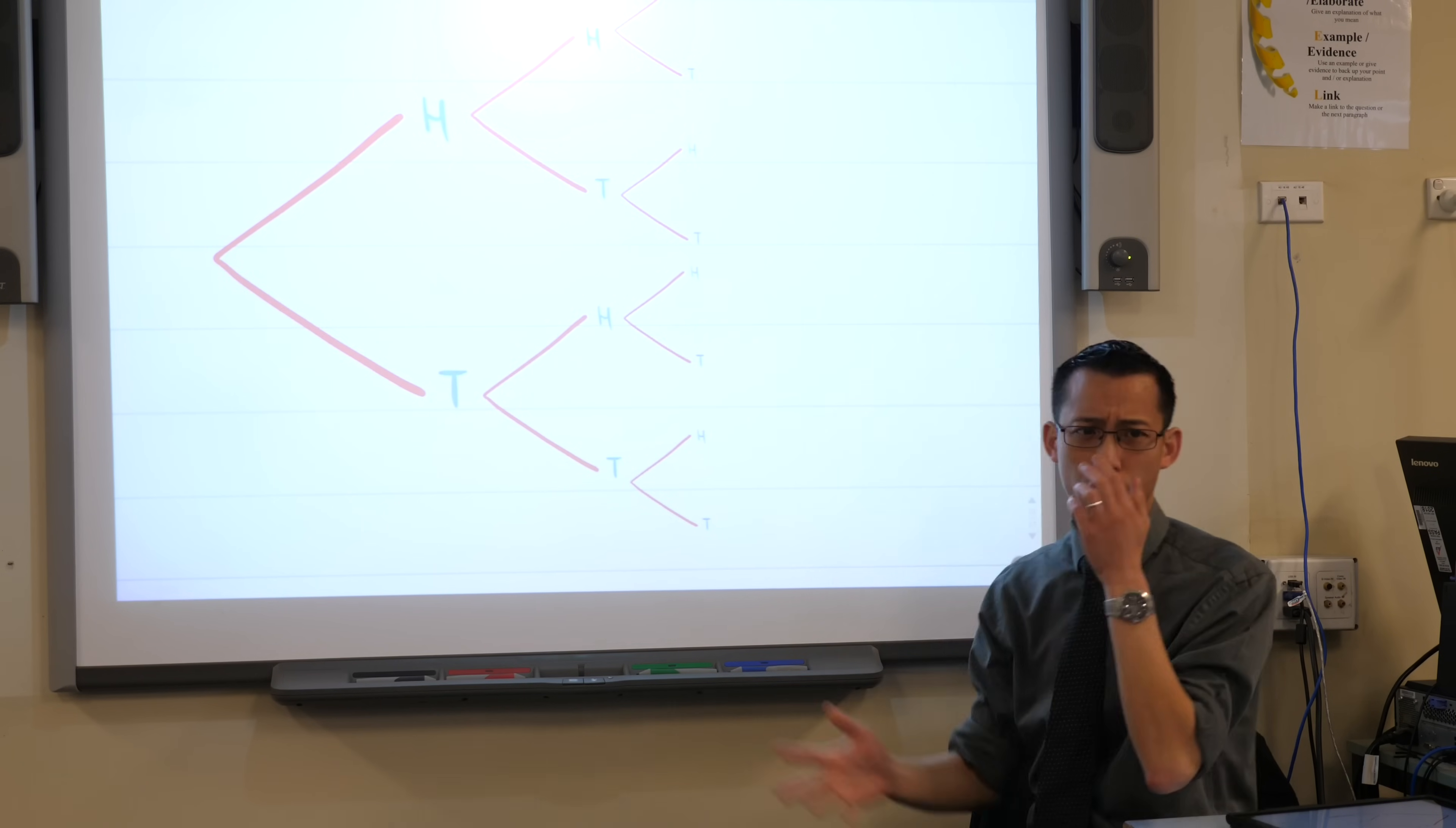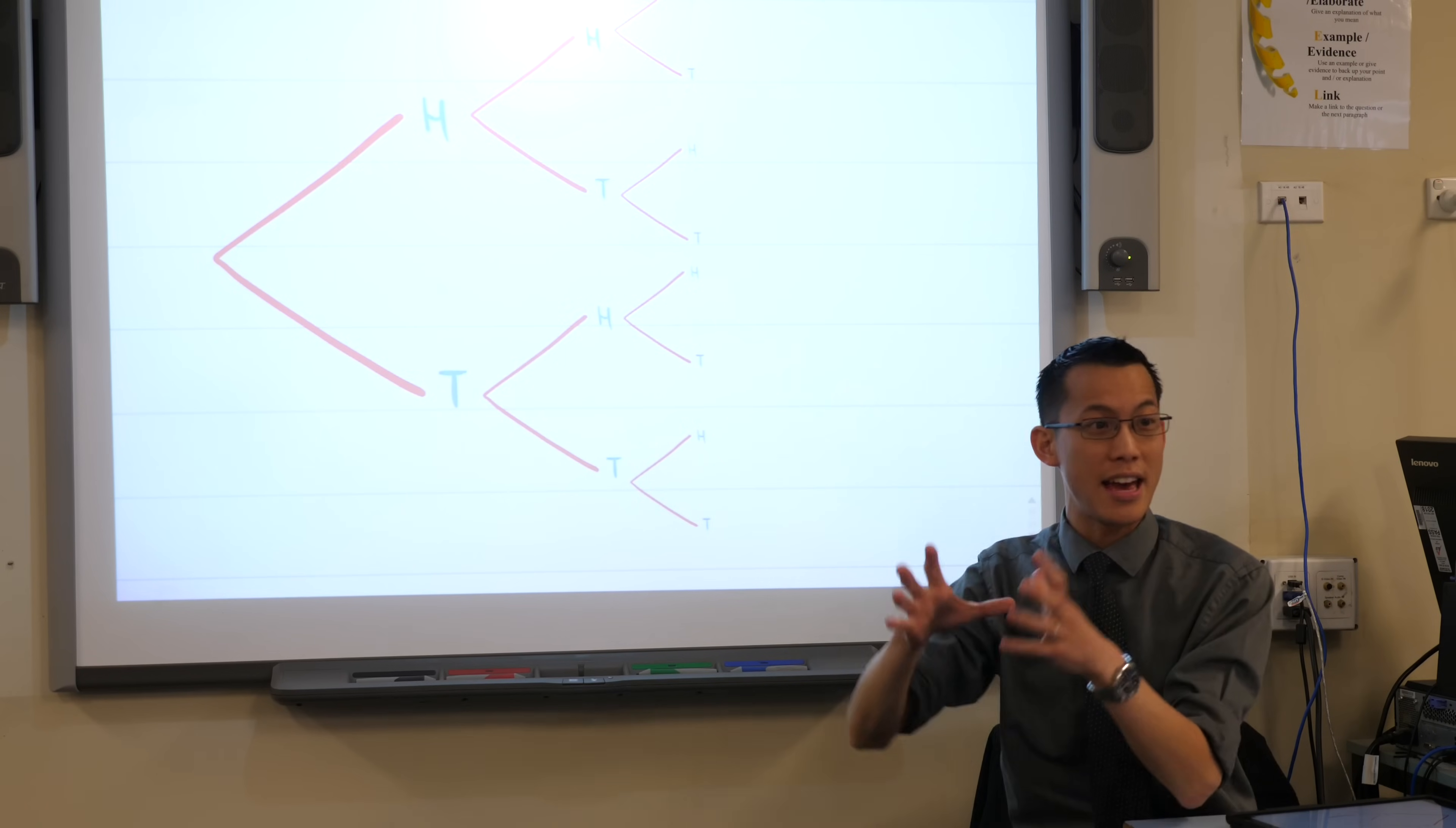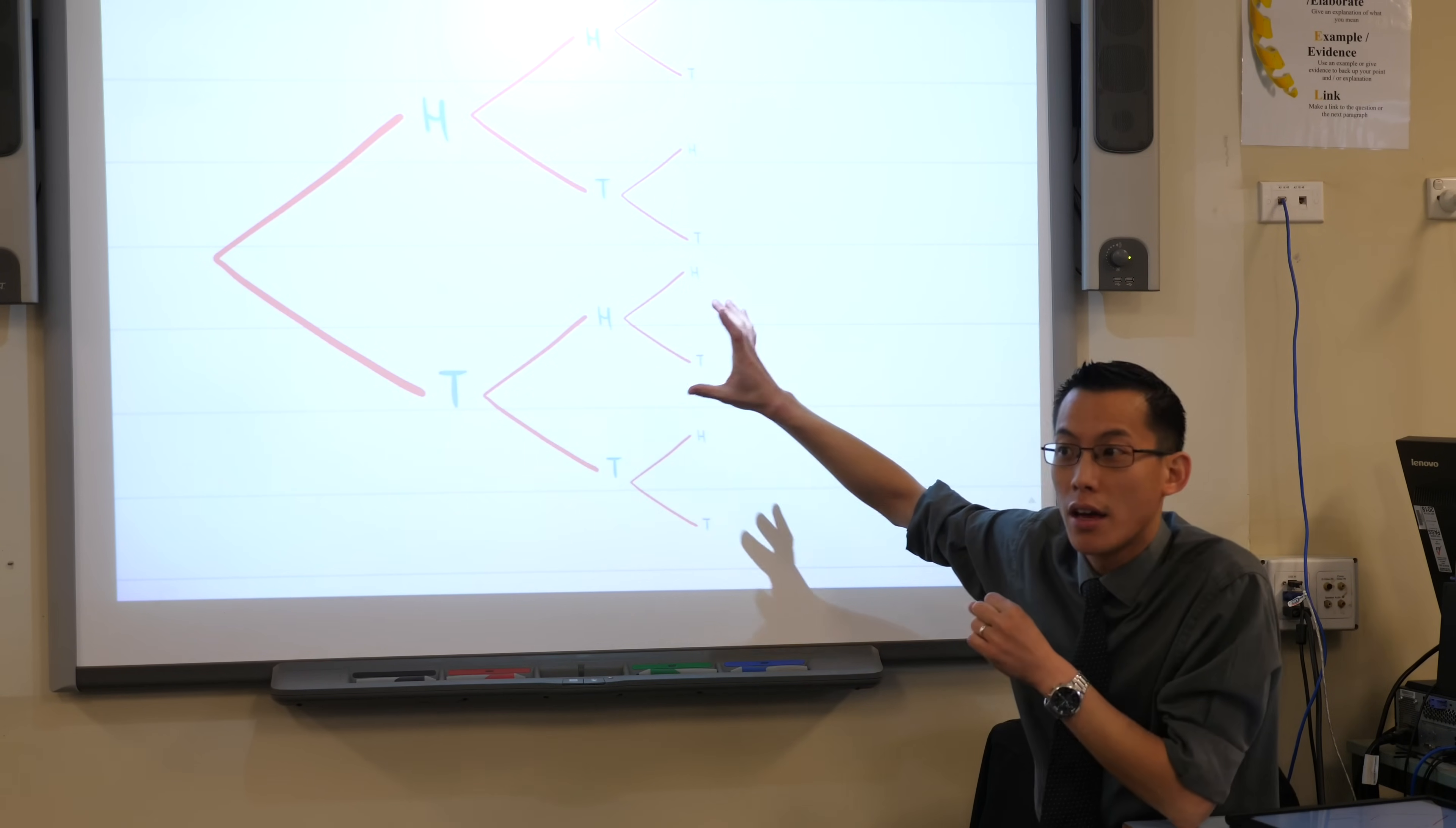Now, this is a tree diagram. It's not a probability tree diagram because I haven't labelled any of the branches with their actual values. Can anyone tell me why in this case it's probably not worth it? Why is it not worth actually labelling with the individual probabilities in this case?